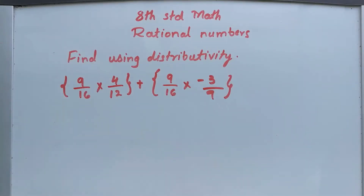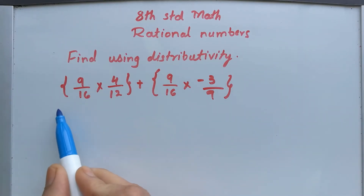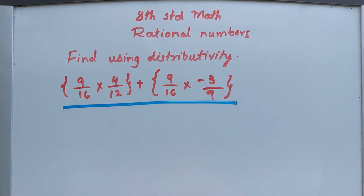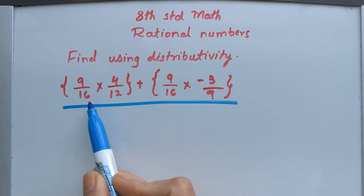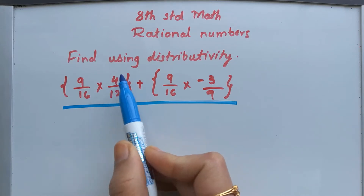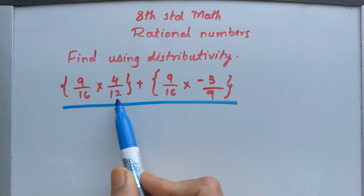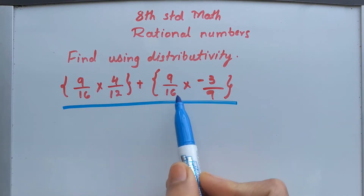Hello everyone, welcome back to my channel. Today let's find the value of this question using distributive property. The question is: 9 divided by 16, multiplied by 4 divided by 12, plus 9 divided by 16 multiplied by negative 3 divided by 9.